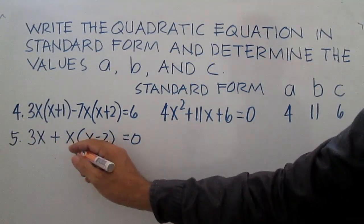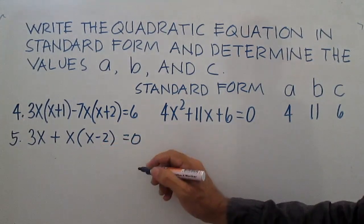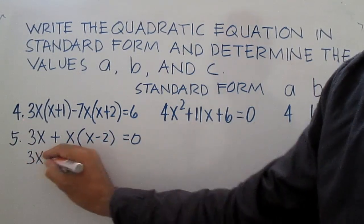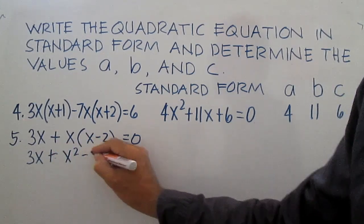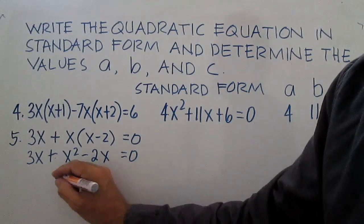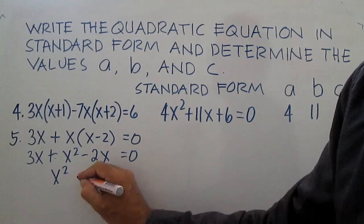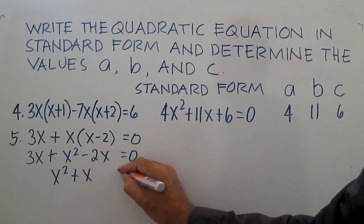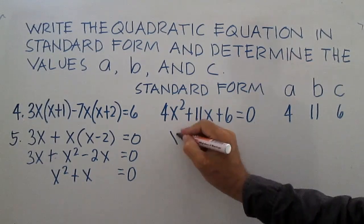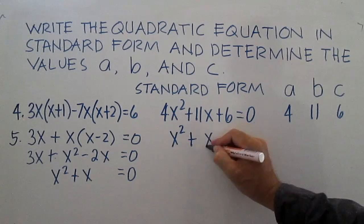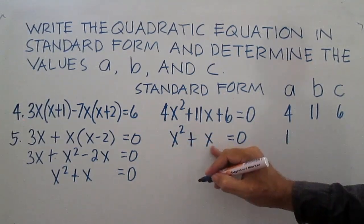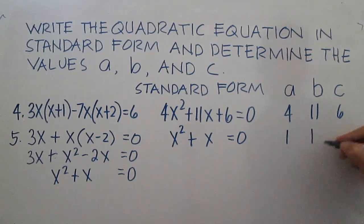Number 5: 3x plus x times the quantity x minus 2 equals 0. Distribute x: 3x plus x squared minus 2x equals 0. Combine similar terms: 3x minus 2x is x, giving x squared plus x equals 0. The standard form is x squared plus x equals 0. A is 1, b is 1, c is 0.